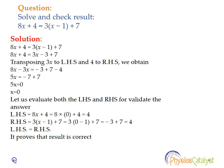Now let us evaluate both the left-hand side and right-hand side to validate the answer. The left-hand side is 8x + 4; substituting x = 0 gives 4. The right-hand side is 3(x − 1) + 7; substituting x = 0 gives −3 + 7 = 4. Both sides are equal, so our result is correct.